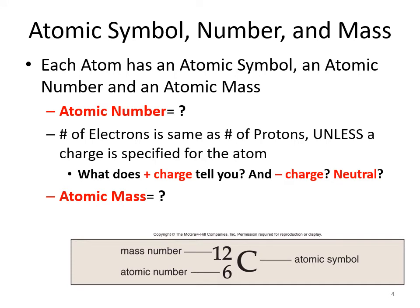Atoms are arranged on what we call the periodic table. For each atom, we distinguish them with an atomic symbol, an atomic number, and an atomic mass. The atomic number is the number of protons for that atom. For instance, carbon has an atomic number of six, which tells you that carbon has six protons.